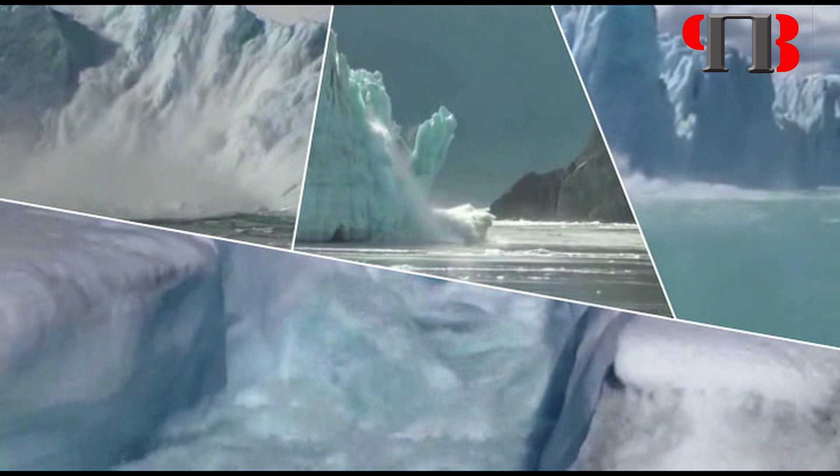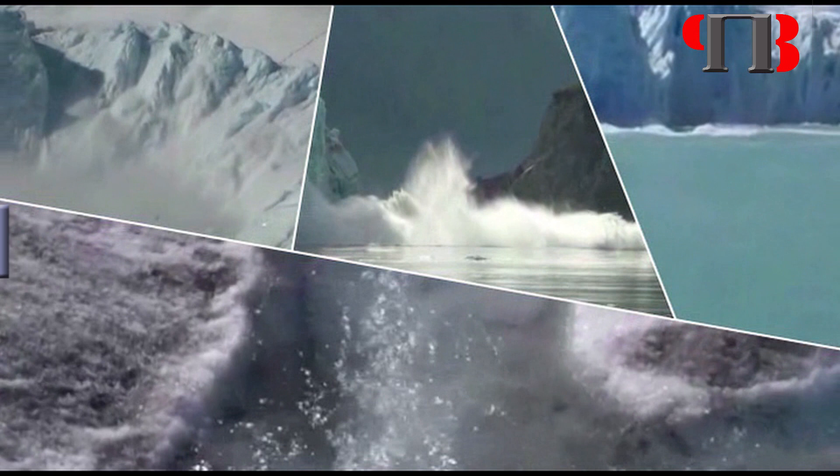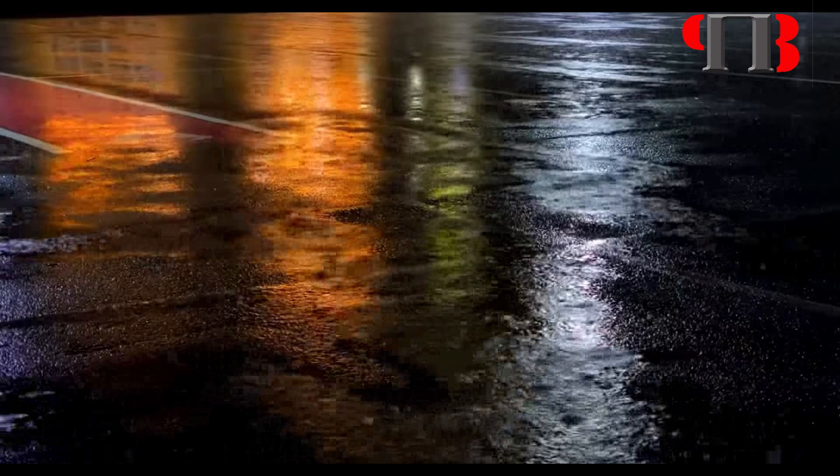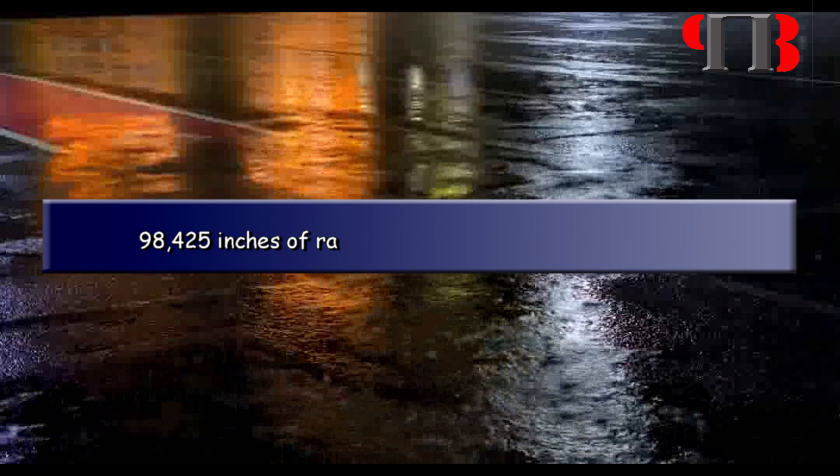These models showed us that a minimum of 8.42 quadrillion tons of water was released on the UK at the end of the last ice age. This is equivalent to 98,425 inches of rain falling on every inch of Britain's landmass, or the same as one inch of rain steadily falling every day for the next 270 years.